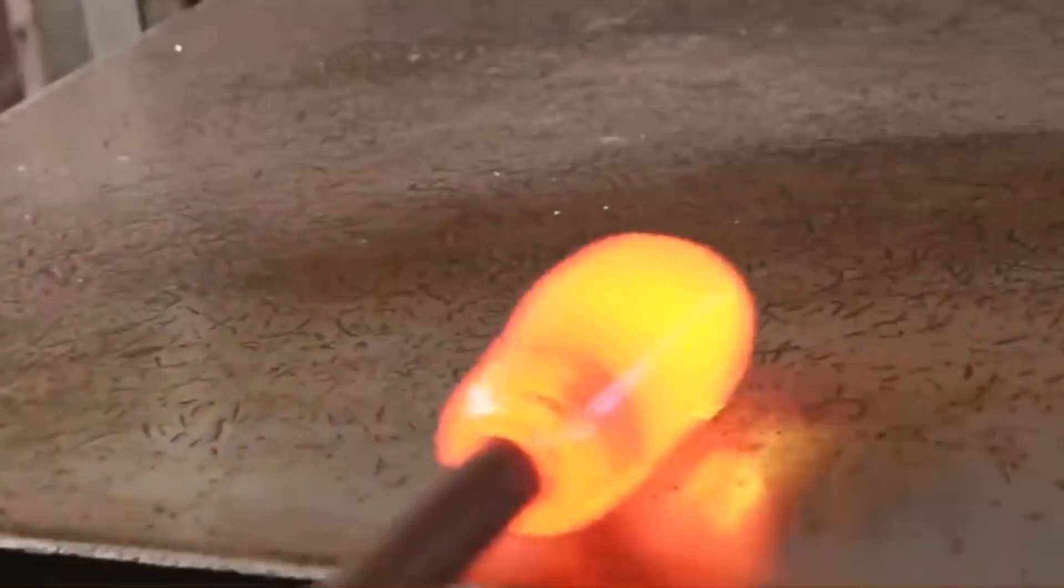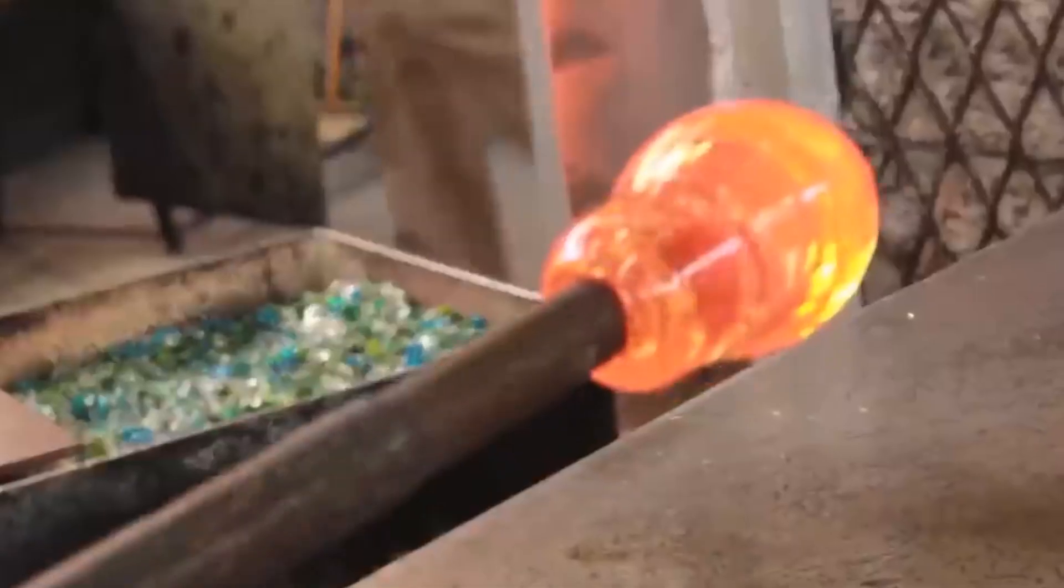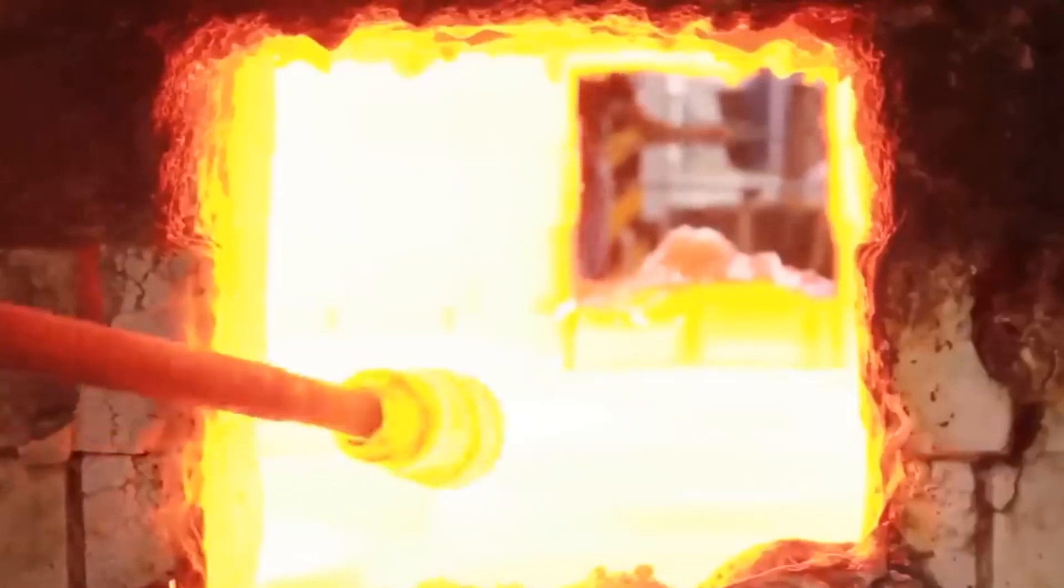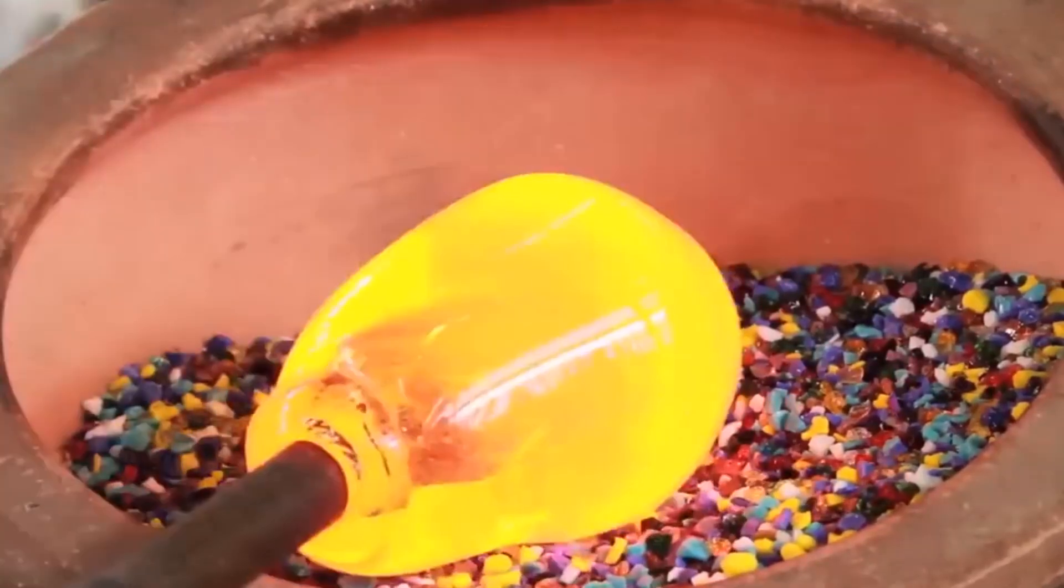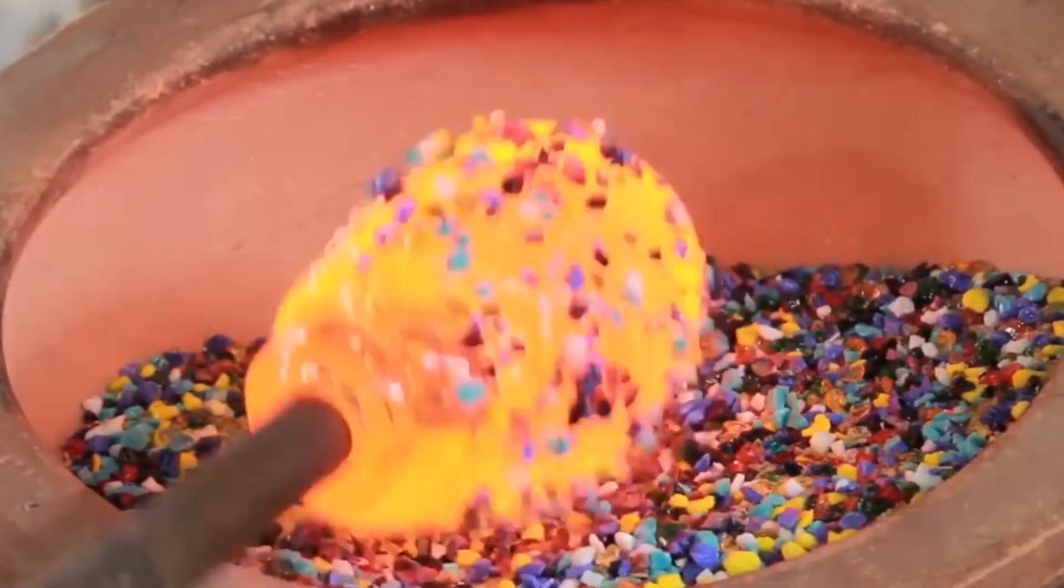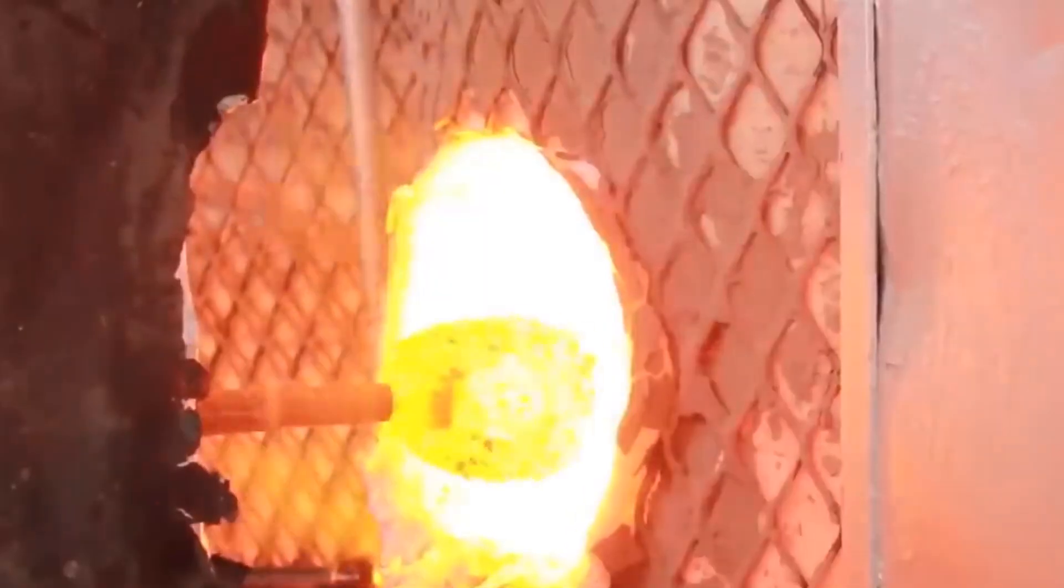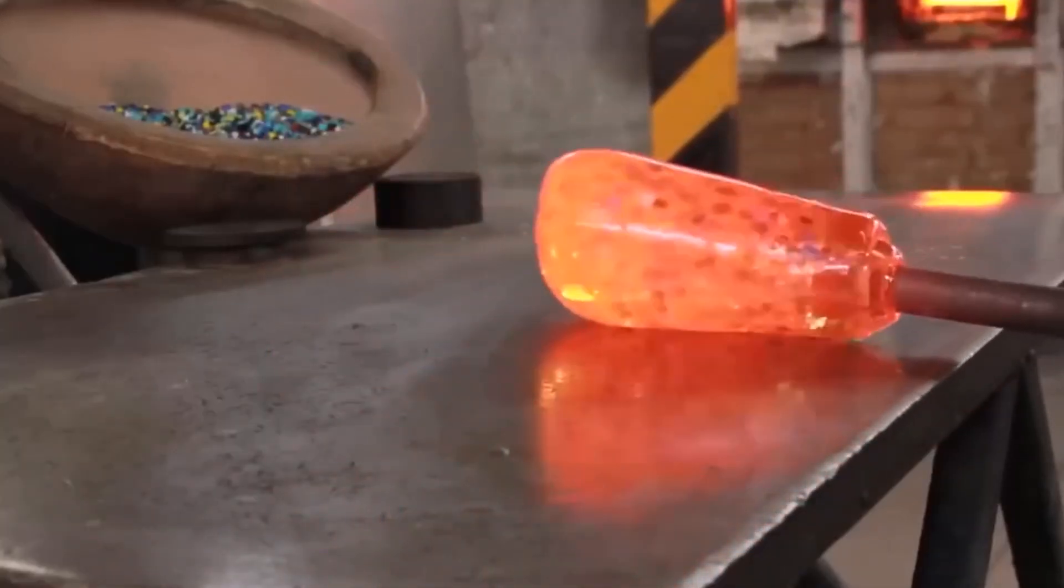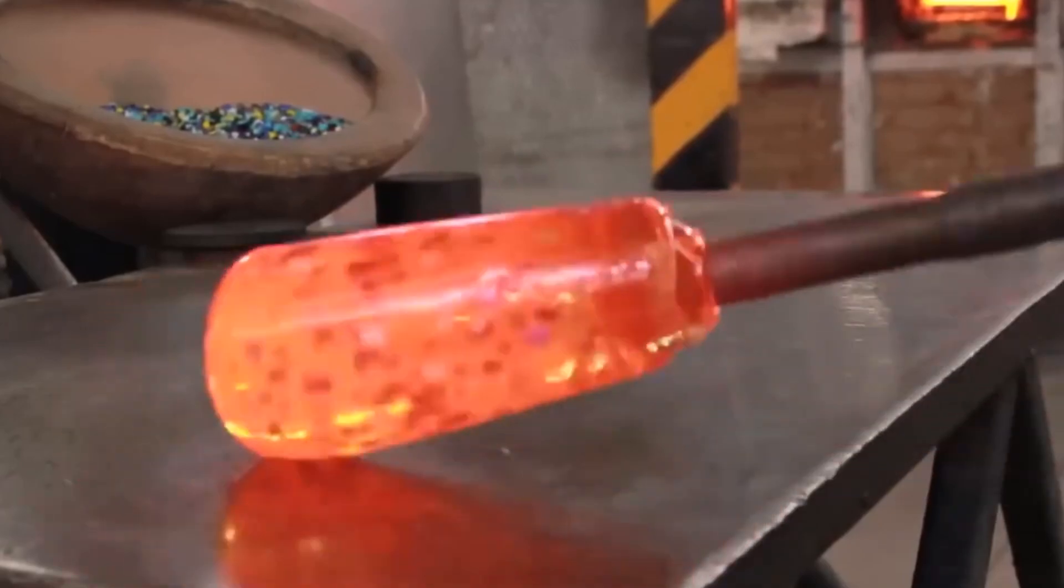One technique employed in bottle formation is pressing. The glassmaker carefully places the molten glass into the mold and applies pressure, shaping it against the mold's contours. This process creates a precise and uniform bottle shape. Another technique, blowing, adds an element of artistry to the process. The glassmaker introduces a small amount of air into the molten glass, using their breath to expand it, gradually giving it the distinctive bottle form.